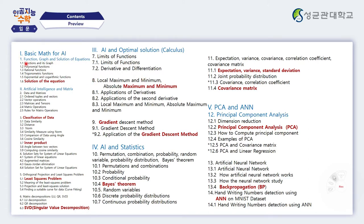In the first chapter, we will learn how to find the solution of equations numerically. In the second chapter, on artificial intelligence and matrix, we will define vectors, matrices, and tensors, then classification of data, inner product, least square solution, and singular value decomposition. In part three, AI and optimal solution, we will learn how to find the maximum and minimum and the gradient descent method. In part four, AI and statistics, we will learn Bayesian theorem, expectation, variance, covariance, standard deviation, and covariance matrix.